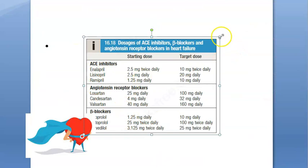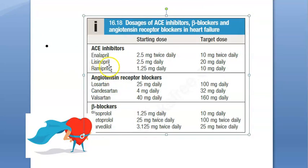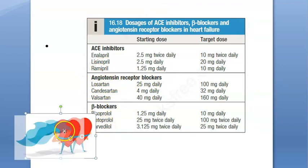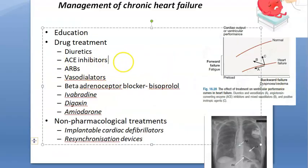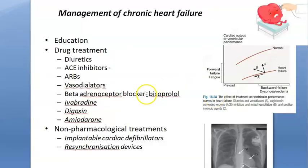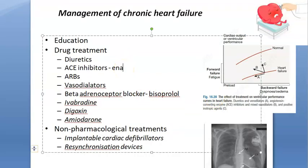ACE inhibitors to remember: enalapril and ramipril. ARBs like losartan and valsartan. Vasodilators include nitrates. Beta blockers like bisoprolol — please remember bisoprolol. Note that beta blockers can sometimes cause problems, so care is needed.